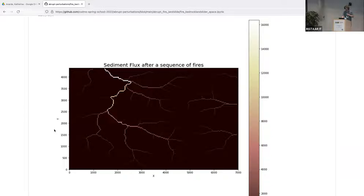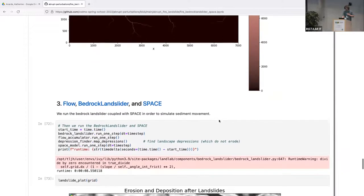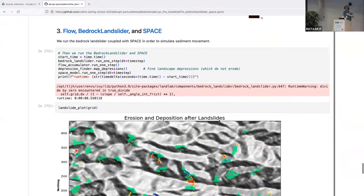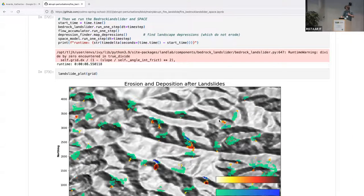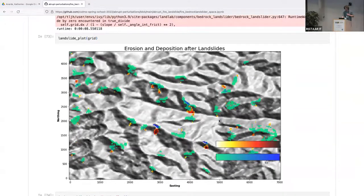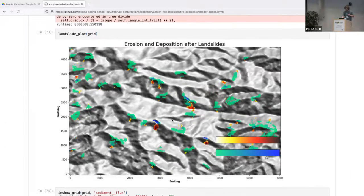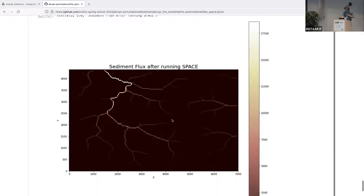Here is our fire function running. Seven fires occur over the ten-year simulation, and it ran for about a minute and a half. Here is a plot of the fire locations and the erodibility change after each fire. Each fire is centered at one of the centers of the circles and multiplies the erodibility of that cell or all the cells within the fire radius. This is the sediment flux after the fires. As you can see, it mostly follows the major drainage pattern up to the north. After this, we run the bedrock landslider and SPACE components to move some sediment around and see how that will affect our sediment flux.